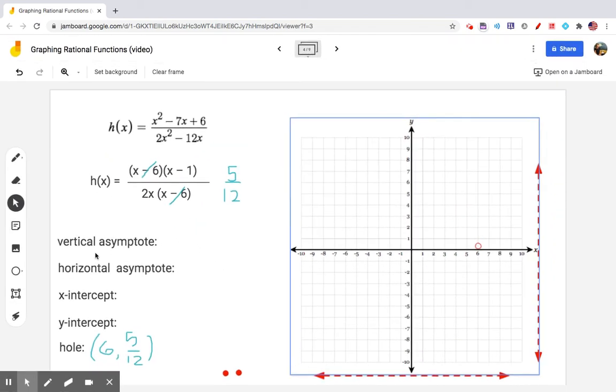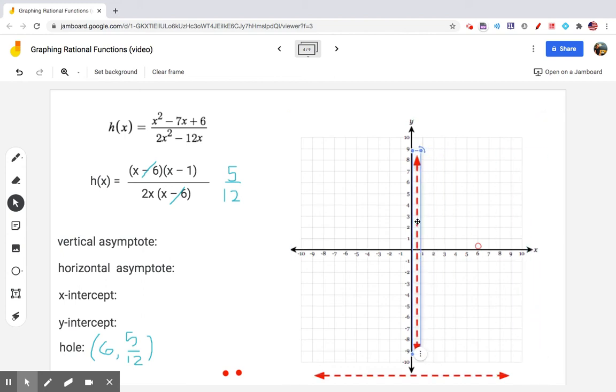Now as far as asymptotes go, there is a vertical asymptote at 0. 0 is not allowed, so I'm going to drag over my vertical line to x equals 0. As far as horizontal asymptotes, the degree of the numerator and denominator match. Therefore, my horizontal asymptote is the quotient of these leading coefficients, so y equals 1 half.